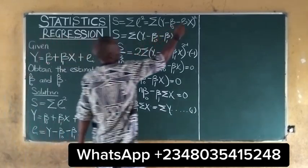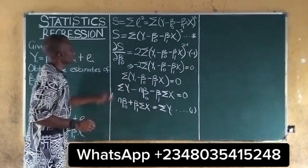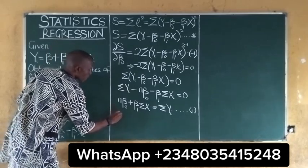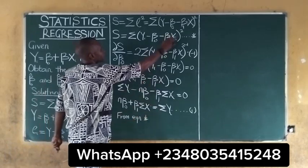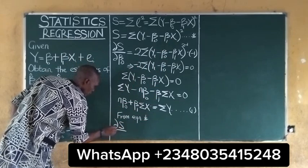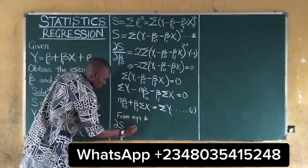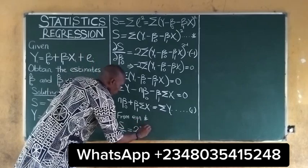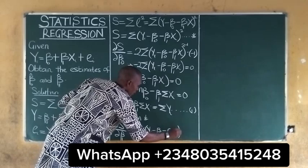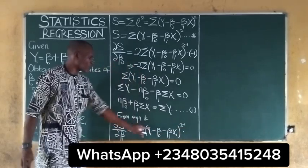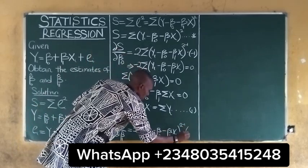We can also take the original expression as our equation star, because we'll come back to it. To obtain B1, from equation star, we differentiate with respect to B1. If we differentiate with respect to B1, we get 2 summation of (Yi minus B0 minus B1*Xi) raised to the power of 1, multiplied by, from the composite function rule, we differentiate with respect to B1, which gives negative Xi.